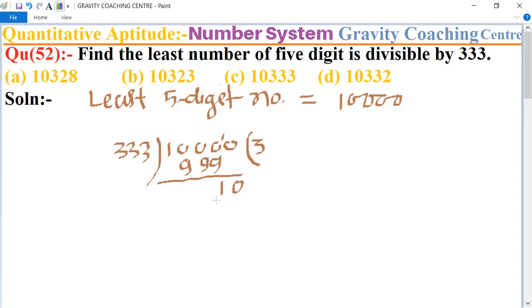So ten is the remainder. Therefore, the required number equals 10,000 plus 333 minus 10.